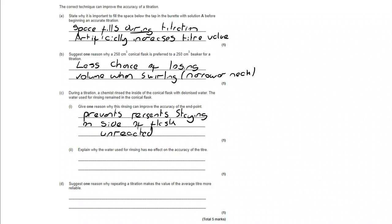But that often raises questions. Why does that not affect the accuracy of the titer? It has no impact on it at all. Well, actually, if I add water to what's in the conical flask, I might be diluting it. I might be increasing the volume. But actually, I'm not changing the number of moles that we are reacting with. So because the number of moles